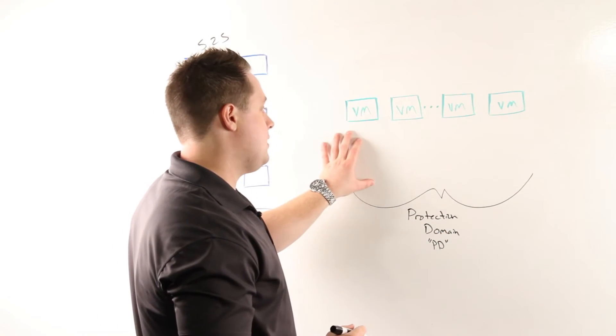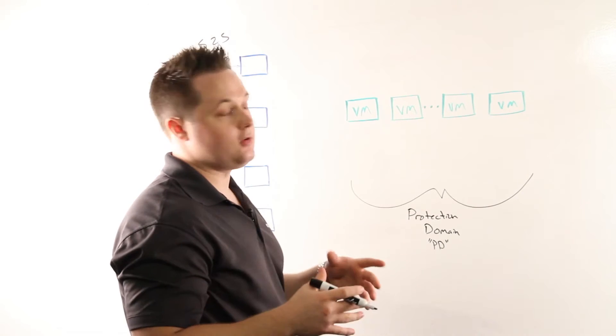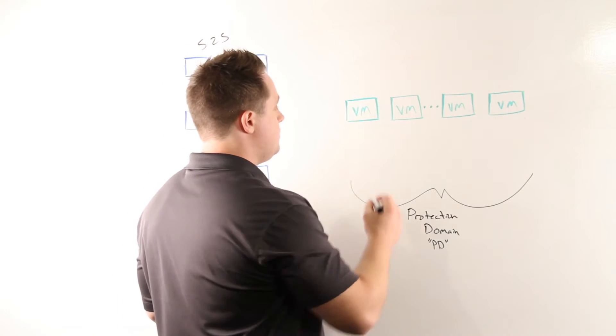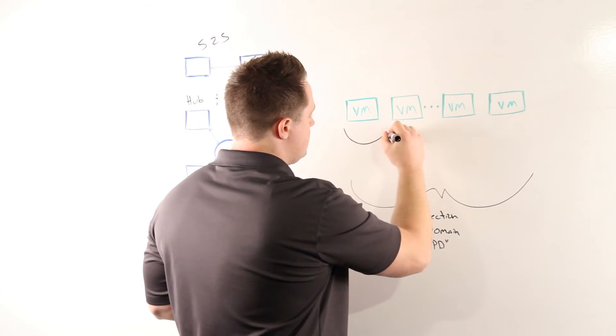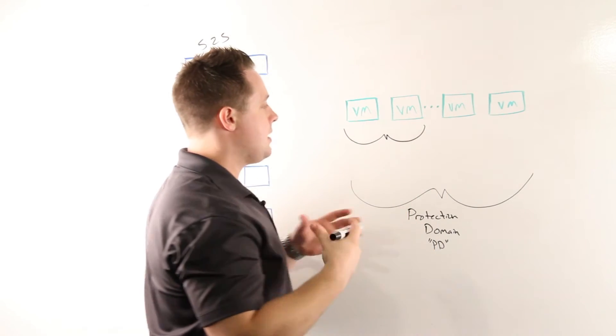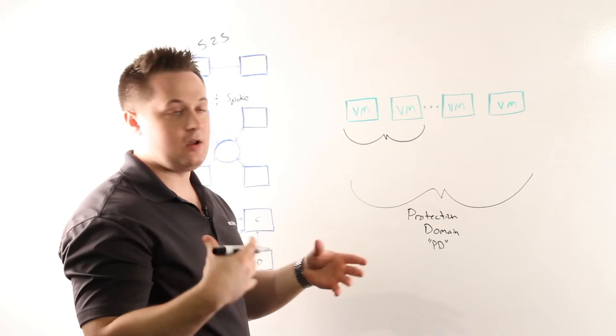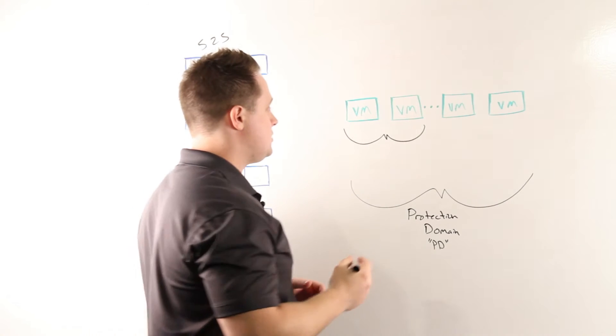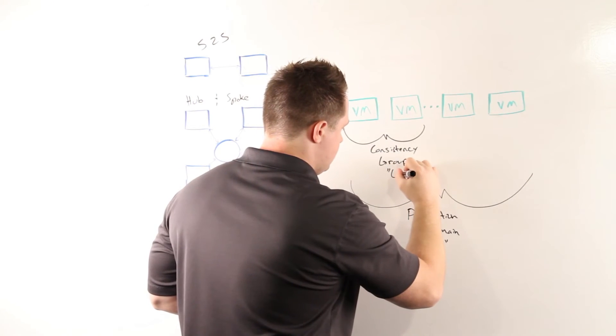Within a protection domain, you can have what's called consistency groups. Essentially, consistency groups are groups of virtual machines or applications which need to be snapshotted and replicated in a crash-consistent or application-consistent manner. You'll see these referred to as CGs.